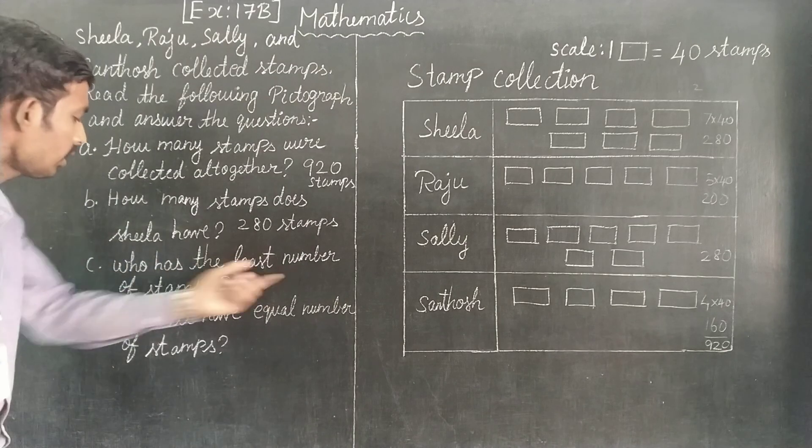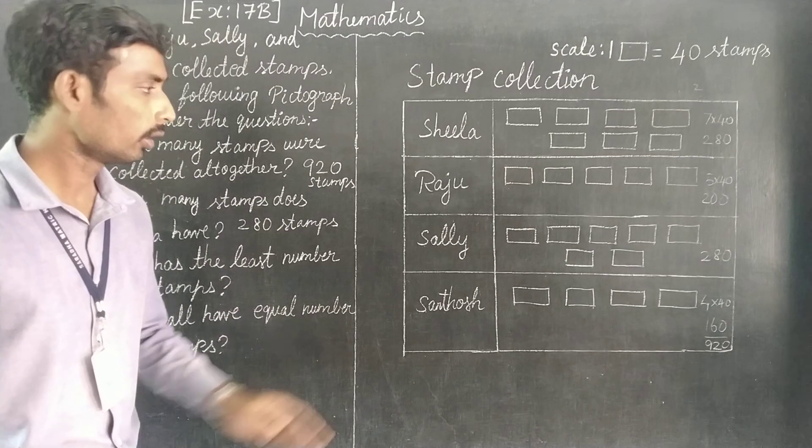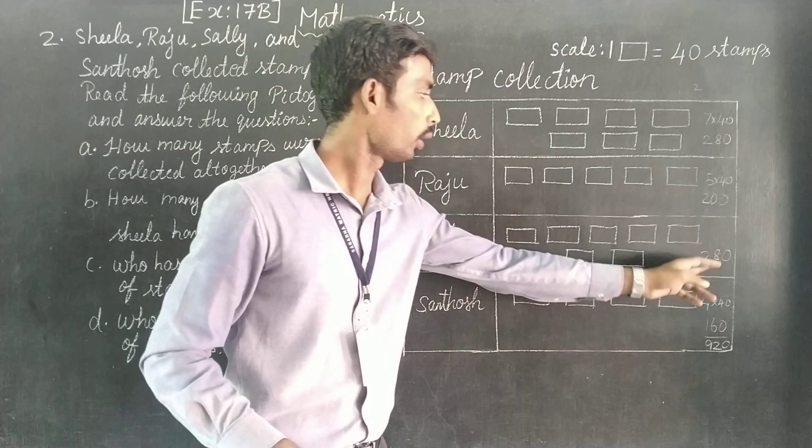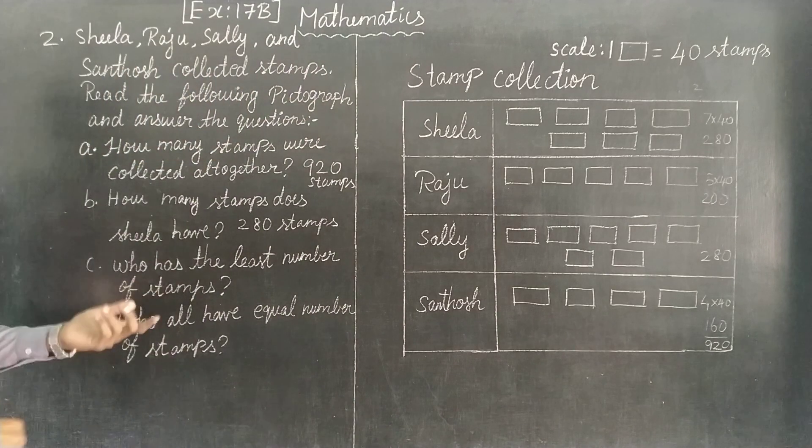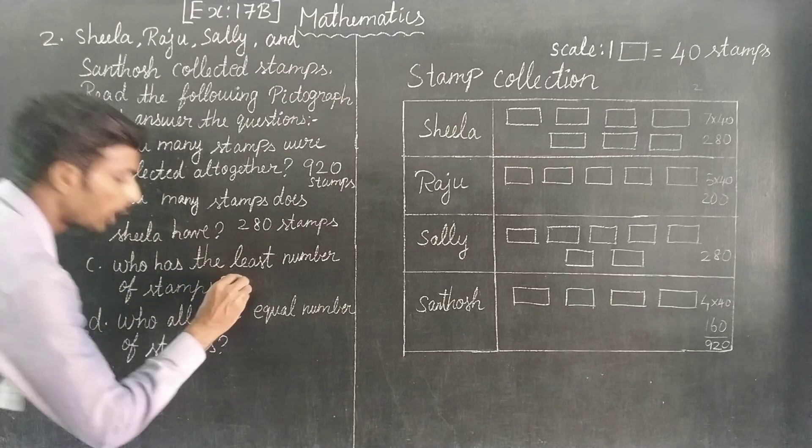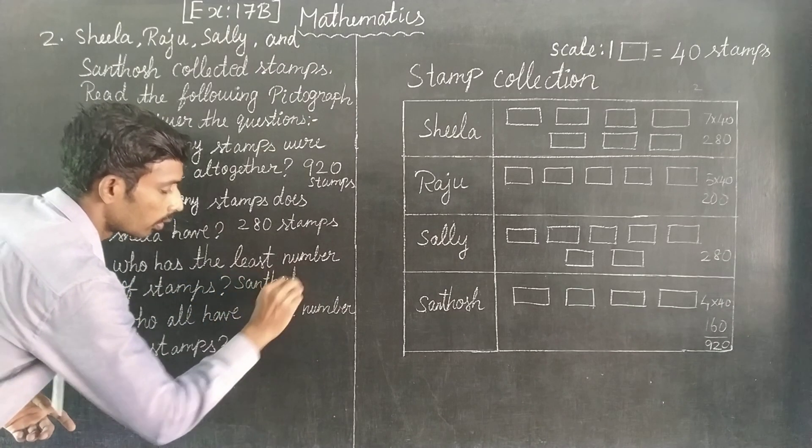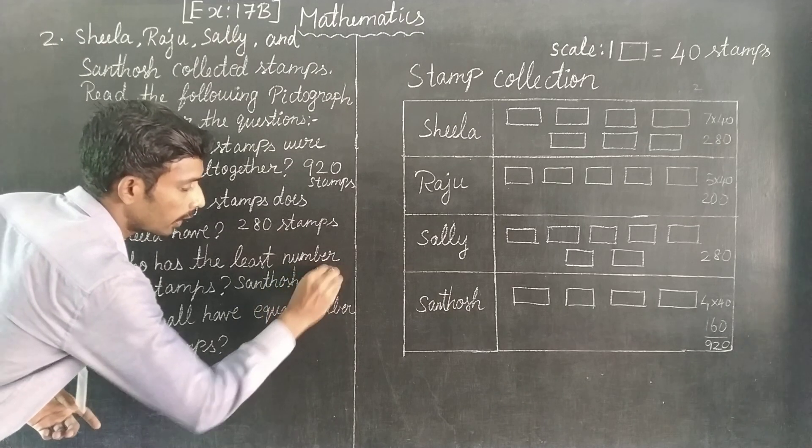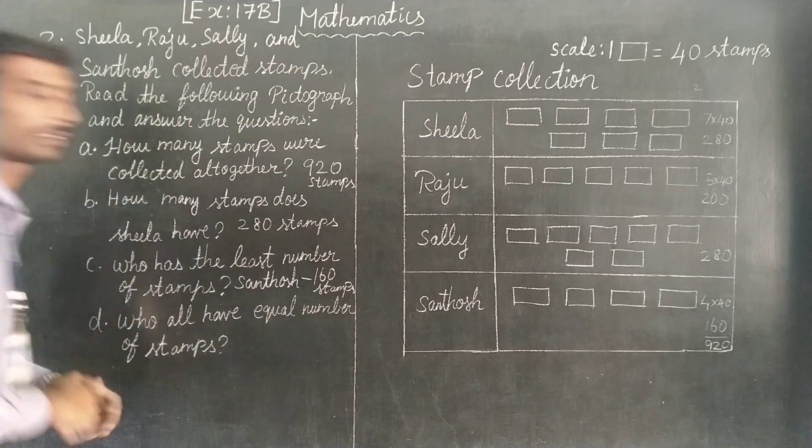Who has the least number of stamps? Sandosh has the least number of stamps - 160 stamps.